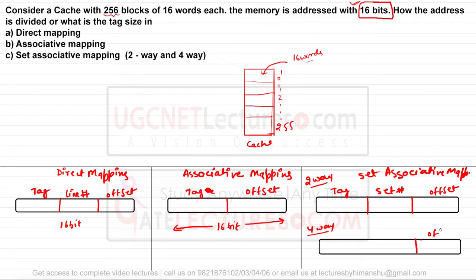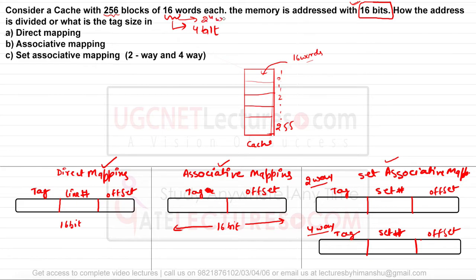The offset will remain the same across all three mappings — whether direct, associative, or set associative. Since every block or line is 16 words, and 16 = 2^4, we need 4 bits to represent the address of every word within a block. So the offset is 4 bits in all three cases.